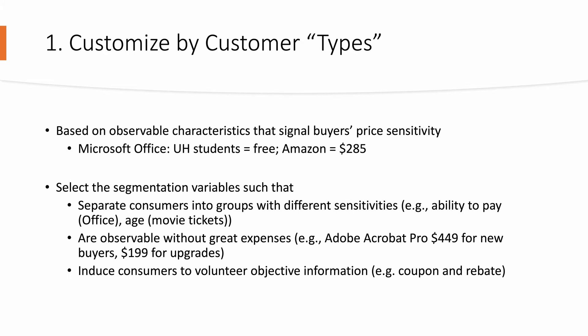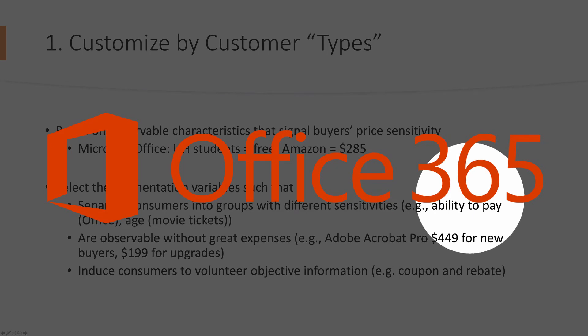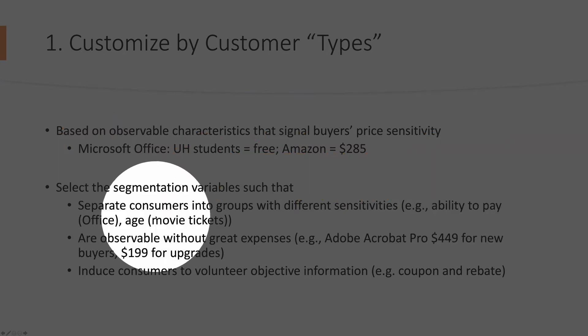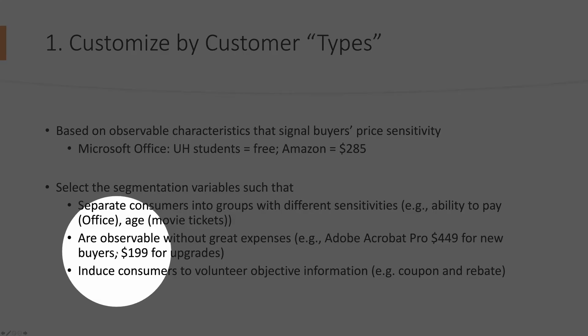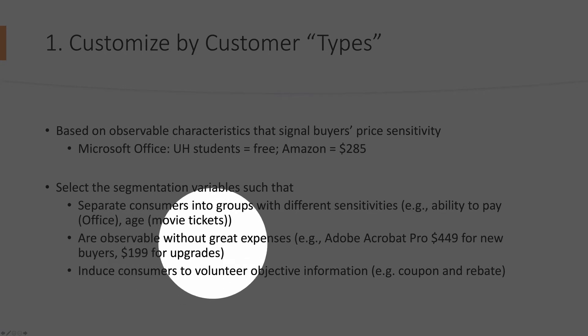On this dimension, in order to select the segmentation variables, we need to be careful. The key is to separate customers into groups with different price sensitivities. For example, in the case of Office, students versus regular customers are separated by ability to pay. Movie theaters sometimes offer matinee pricing — lower ticket prices in the afternoon — which is essentially a separation by age, since retirees who are not working can go see a movie in the afternoon. Another important thing is the segmentation variables should be observable without great expense.